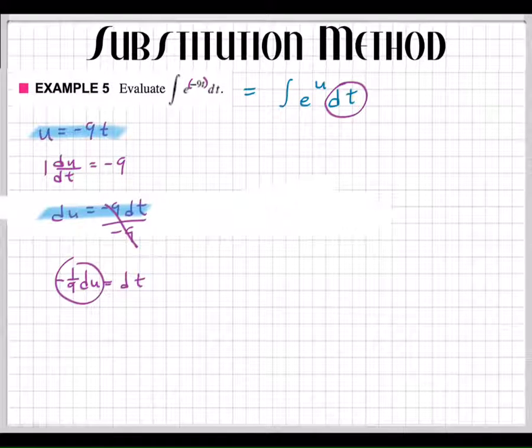And so, this is what it would look like. I'm going to put the negative 1 over 9 out in front, because he's a scalar. E to the u, and now I have a du. What's the anti-derivative of e to the u? Isn't that beautiful?